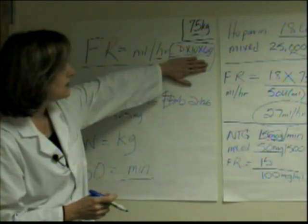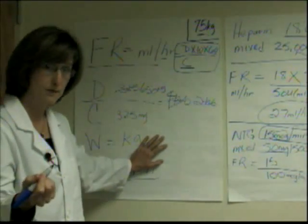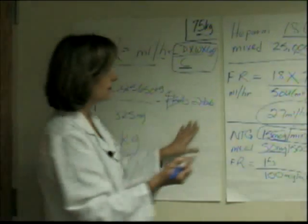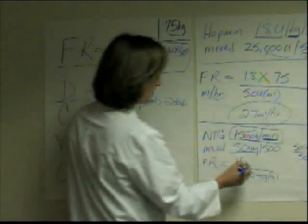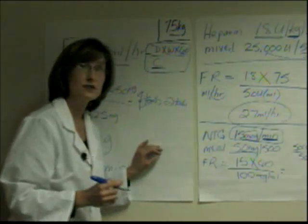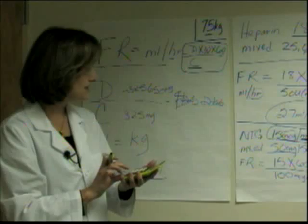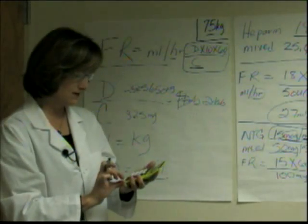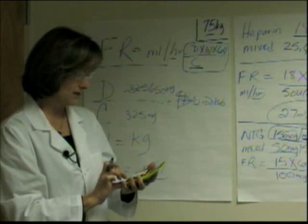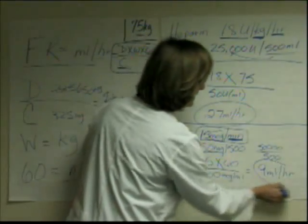Go back to the formula. Do I need the patient's weight? No — it's 15 micrograms per minute, not per kilogram per minute. Do I need the 60 multiplier? Yes, because it's ordered in minutes and flow rate is always in milliliters per hour. So: 15 micrograms times 60, divided by the concentration of 100 micrograms per milliliter. It's fine to use a calculator and to write down these equations — the most important thing is giving the right dose. Dividing those out gives me 9 milliliters per hour — that's what I set my pump at.